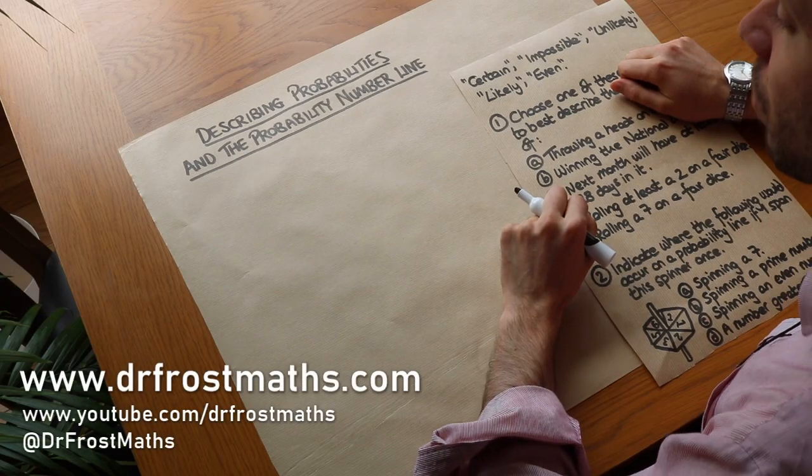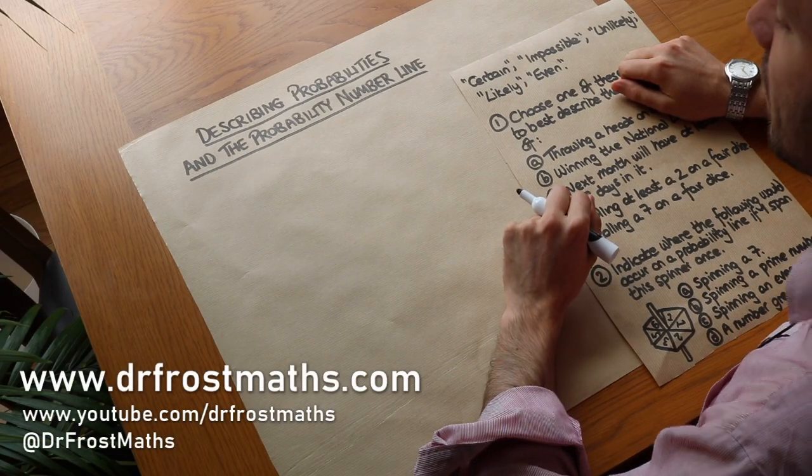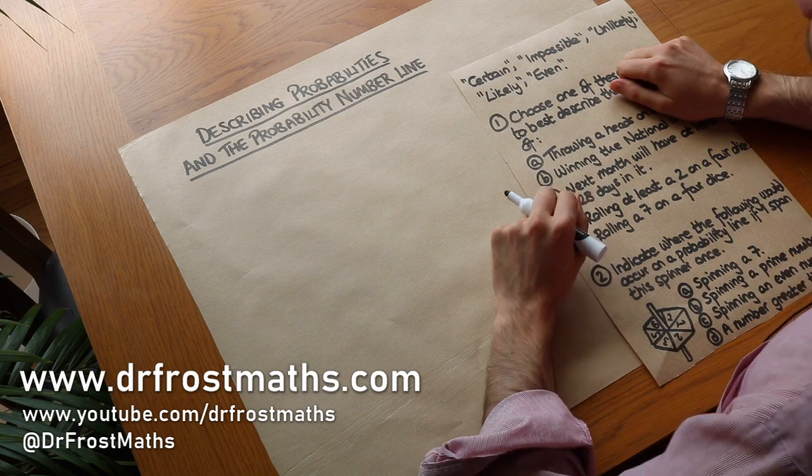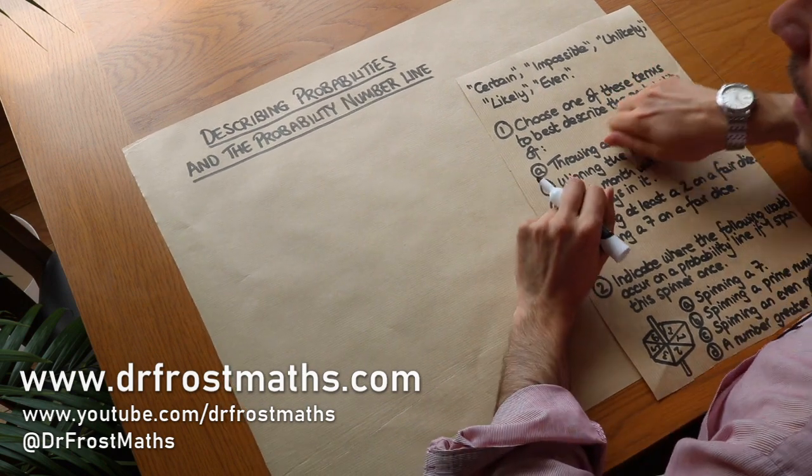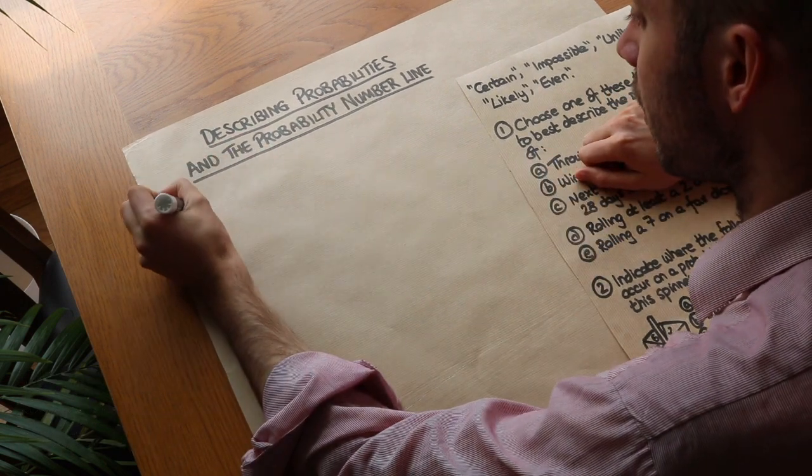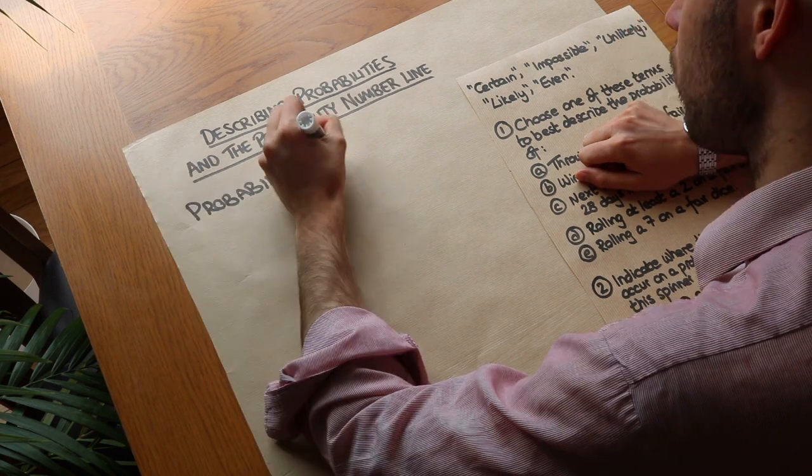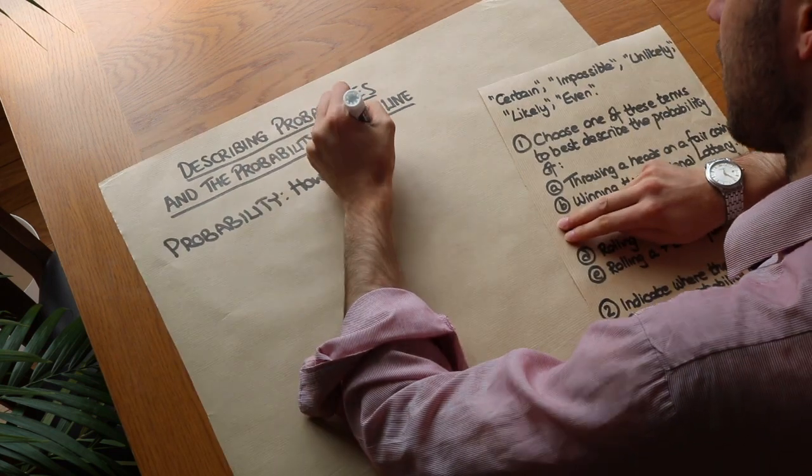Hello and welcome to this video on describing probabilities and the probability number line. Now what probability is, is how likely something is to happen. So probability, how likely something is to happen.